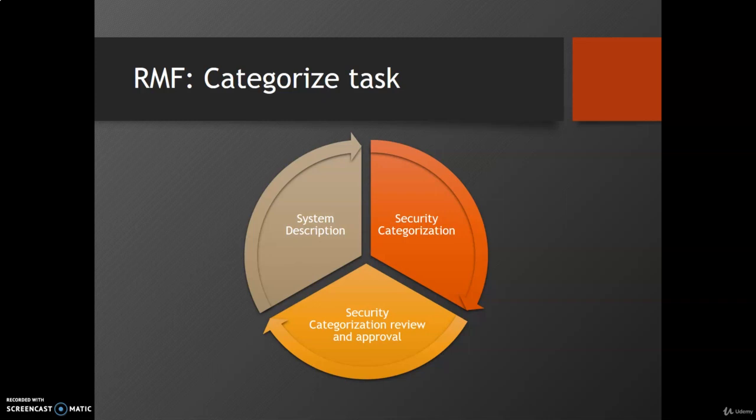The purpose of the Categorize step is to inform organizational risk management processes and tasks by determining the adverse impact to organization operations, assets, individuals, and other organizations with respect to loss of confidentiality, integrity, and availability of organization systems and information processed and transmitted by those systems.